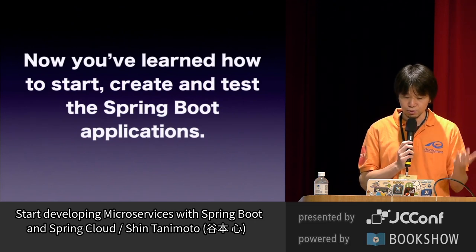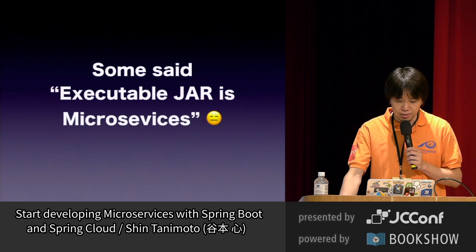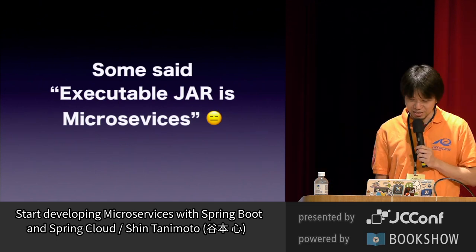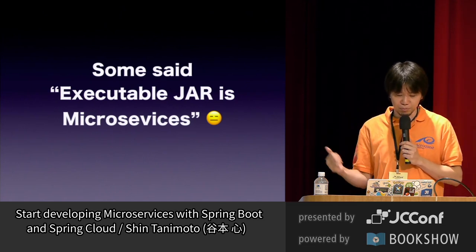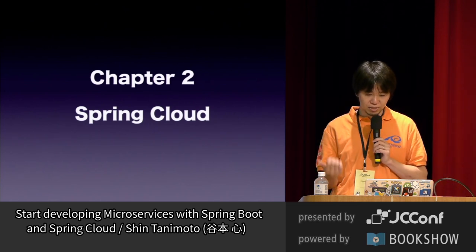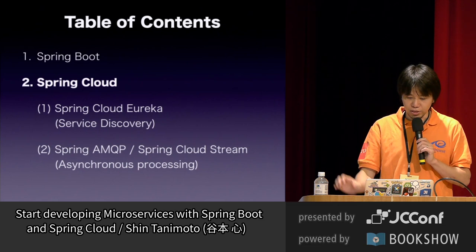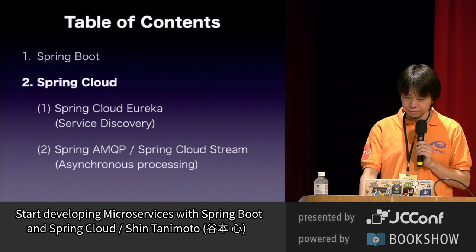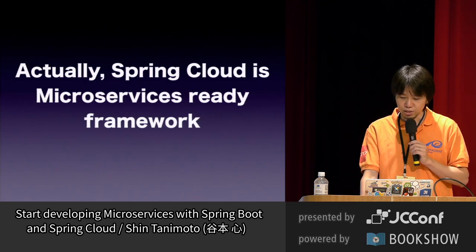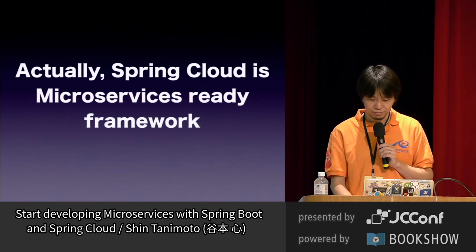Now we've learned how to start, create, and test Spring Boot applications. Some said executable JAR is microservices — but no. Let's get down to Spring Cloud, which is for microservices. I will explain two things from Spring Cloud: Spring Cloud Eureka and Spring Cloud AMQP, and also Spring Cloud Stream. Spring Cloud sounds like an AWS or Azure framework, but actually Spring Cloud is a microservices-ready framework — it's for microservices, not just a cloud platform.